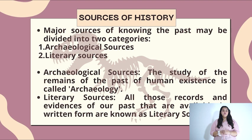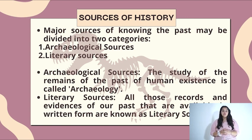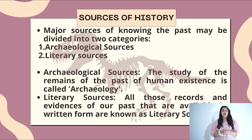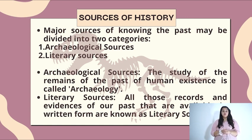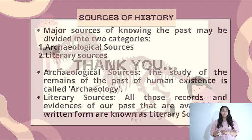Sources of history. Major sources of knowing the past may be divided into two categories: archaeological sources and literary sources. Archaeological sources refer to the study of remains of past human existence, which is called archaeology. Literary sources are all those records and evidence of our past that are available in written form. Thank you.